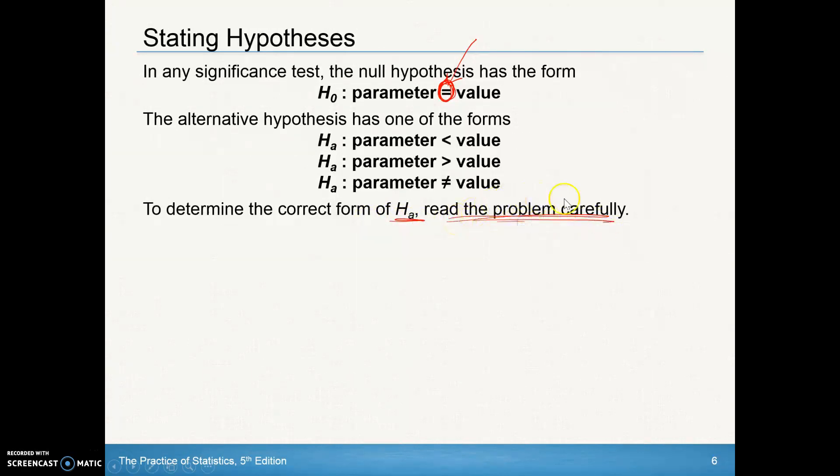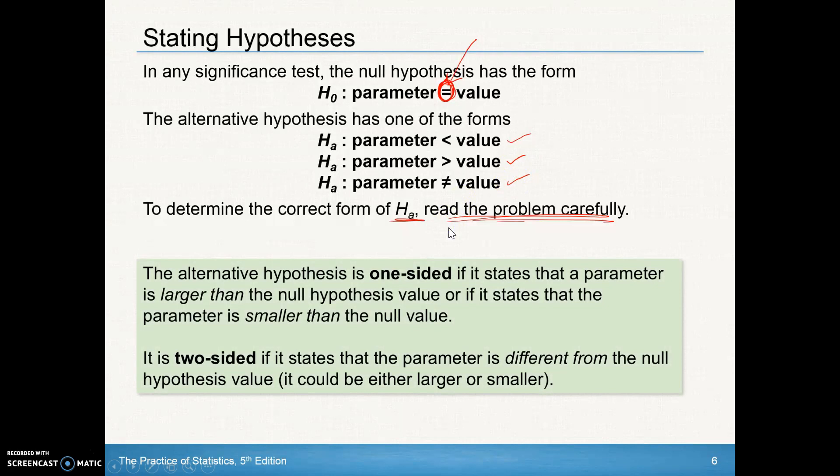To determine the correct form of an alternative hypothesis, you've got to read the problem carefully. Are they saying that the team says they're an 80% free throw shooter and I believe they're not as good? Well, then I would be using parameter less than value. Or maybe the other way around - if they're an 80% free throw shooting team and I say no, they're better than that, that's the one I'd be using for the alternative. Or if I'm just trying to say I don't think they're an 80% free throw shooter, I just think it's different than that, that'd be the not equal to option. An alternative hypothesis, if it's just greater than or less than, that is a one-sided hypothesis. If it's not equal to, that's called a two-sided because it could be either greater than or less than.